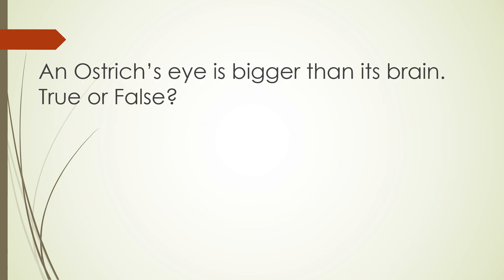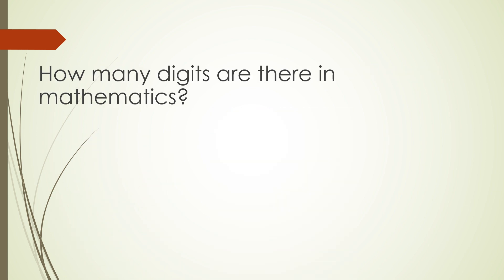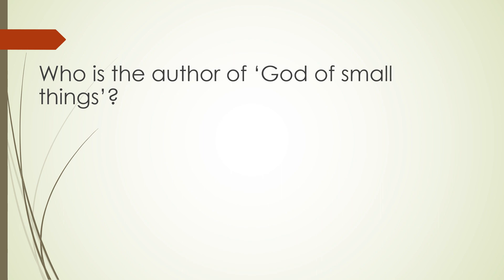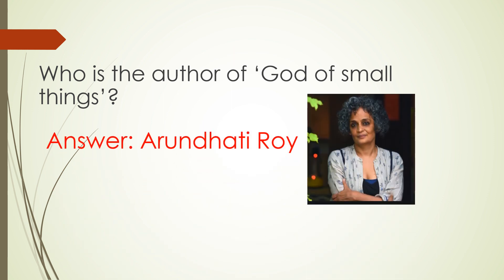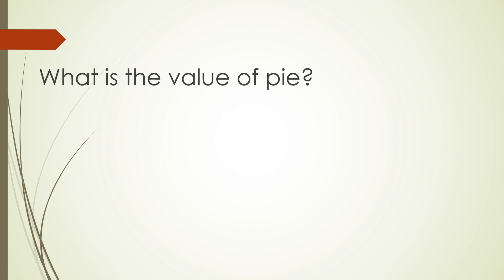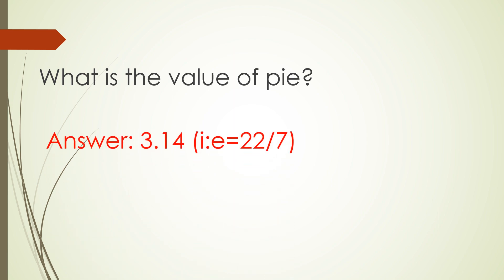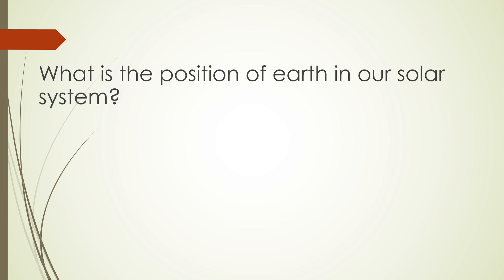An ostrich's eye is bigger than its brain — is it true or false? Answer: true. How many digits are there in mathematics? Answer: infinite. Who is the author of God of Small Things? Answer: Arundhati Roy. What is the value of pi? Answer: 3.14. What is the position of Earth in our solar system? Answer: third.